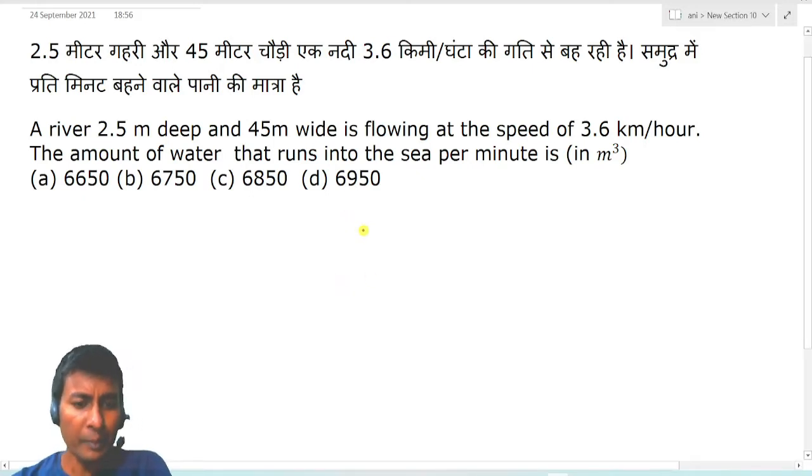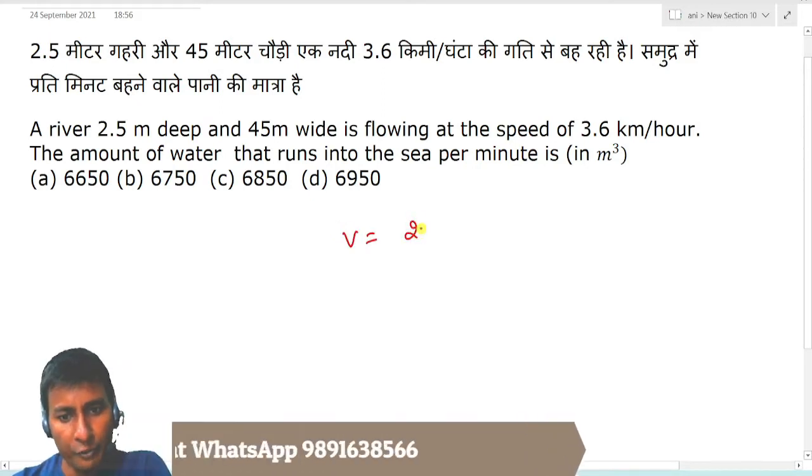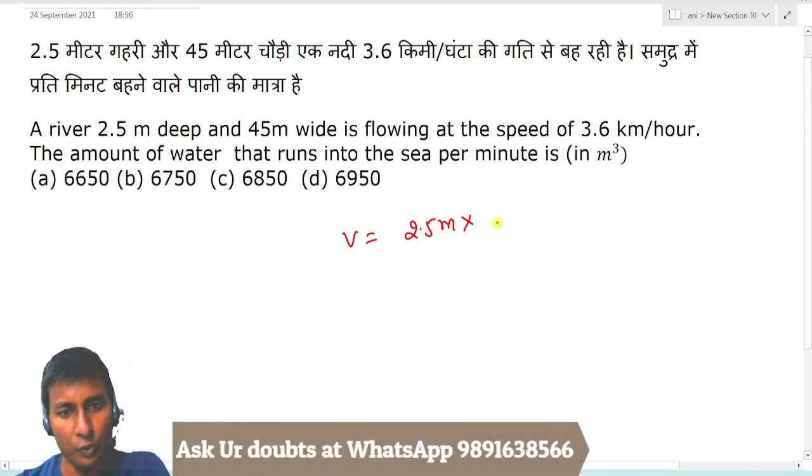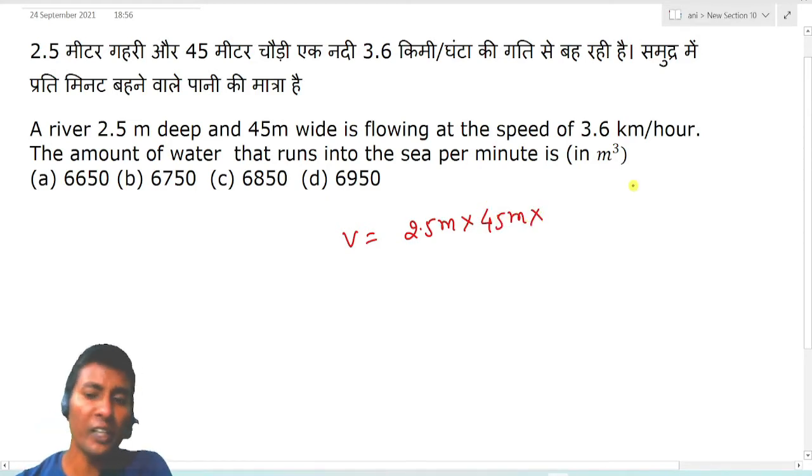Simply, if you calculate the volume of water, then what is it going to be? 2.5 meter into 45 meter, and the flowing rate is 3.6 km per hour.